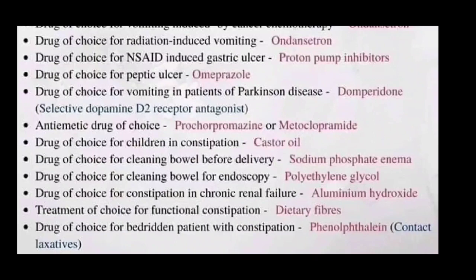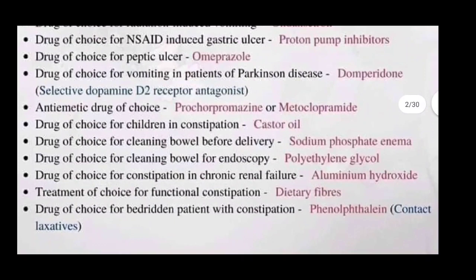Drugs of choice for vomiting in a patient with Parkinson's disease is domperidone, which is a selective dopamine D2 receptor antagonist. The prokinetic drug of choice is metoclopramide. Drugs of choice for constipation in children is castor oil.